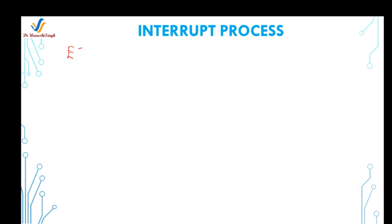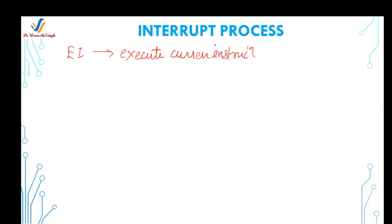Now let's see the interrupt process — how the 8085 microprocessor handles an interrupt. The programmer needs to first write the EI instruction, which makes the microprocessor ready to receive the interrupt signal from the external device. After receiving the interrupt request, it will first finish the current instruction execution, and then save the memory location of the next instruction into the stack memory — similar to pushing the contents of the program counter onto the stack.